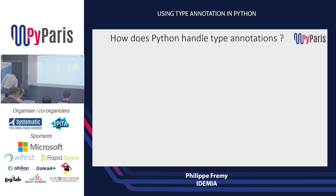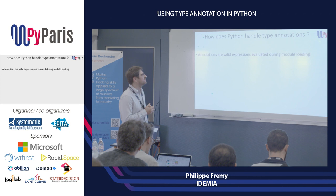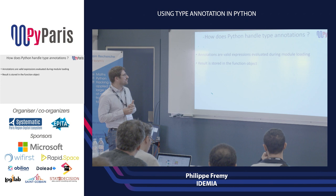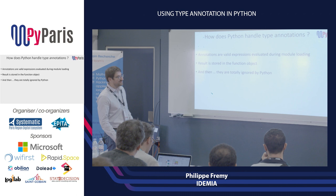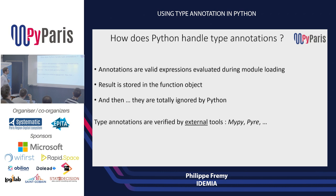Now that we've put type annotations, what does Python do with them? Annotations are valid expressions, so Python needs to compute them — they are evaluated during module loading. The result of this evaluation is stored in the function object. And then that's it. Python itself does nothing with the type annotation except store them. If you want to verify type annotations, you need to run external tools. This means that Python the language itself did not become statically typed — it just provides static type facilities to be used externally.